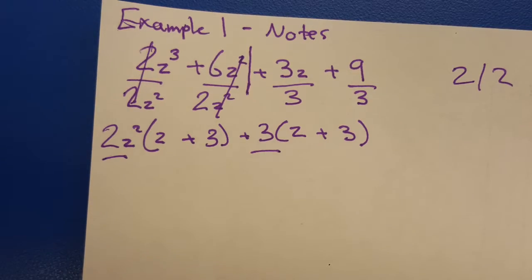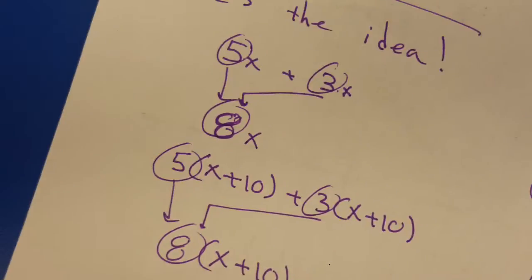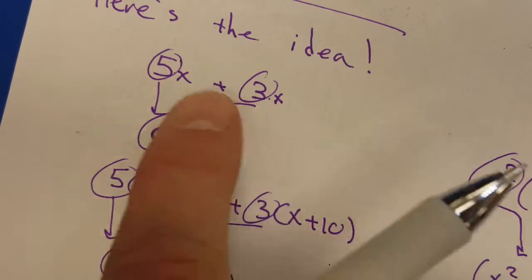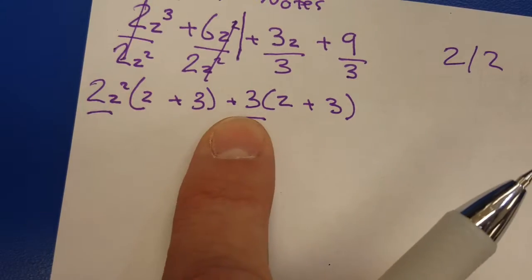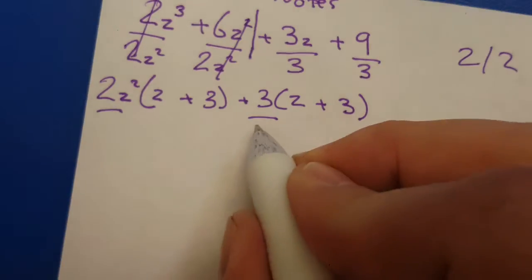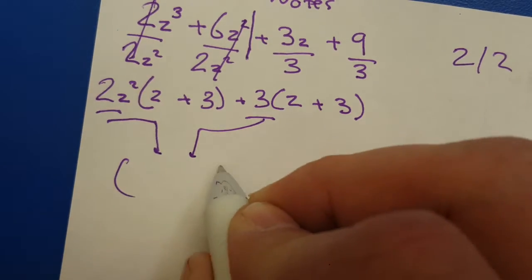What's going on here? This number and this number are multiplying. They're both multiplying the same thing. That means you can group them. It is no different than when I showed you this right here. The 5x and the 3x. They're doing the same thing, so you can group them. The 2z squared and the 3 are doing the same thing. So you can group them in their own bracket.